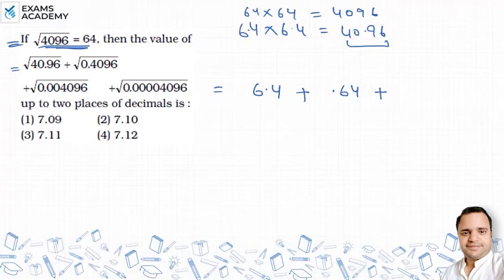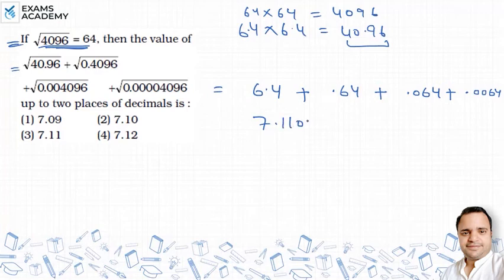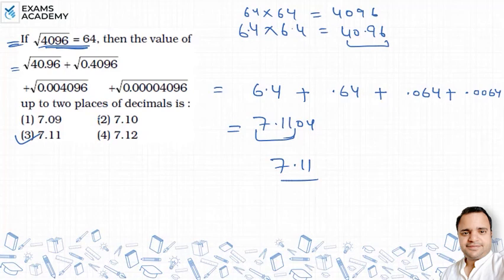For the last term with 8 digits after the decimal, the value after removing the square root will be 0.0064. Now we simply add all the values: 6.4 + 0.64 + 0.064 + 0.0064 = 7.1104. Up to two decimal places, this is 7.11, so option 3 is the correct answer.